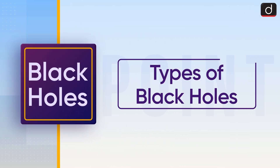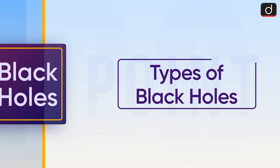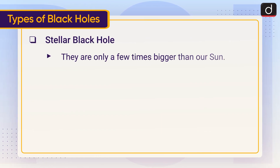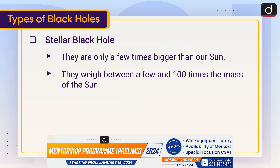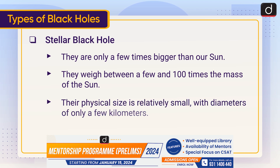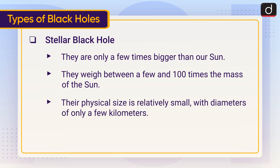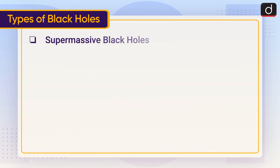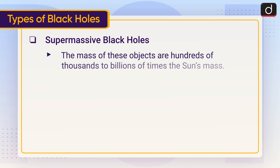Moving on to types of black holes: first is stellar black holes. They are only a few times bigger than our sun and weigh between a few and a hundred times the mass of the sun. Their physical size is relatively small, with diameters of only a few kilometers. In the Milky Way galaxy, there are an estimated 10 million to 1 billion stellar mass black holes.